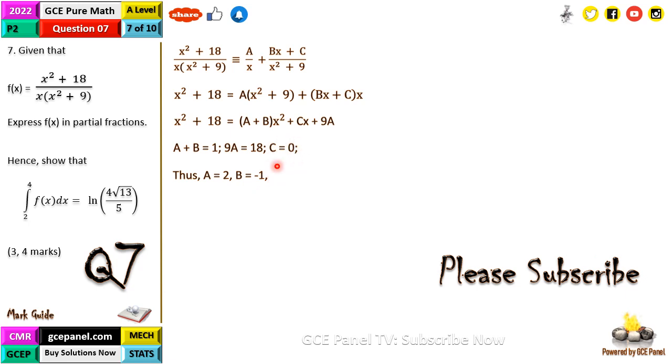Therefore f(x) can be written as being identical to 2 over x minus x on x squared plus 9. Our b is negative 1 so we have written negative 1 here.